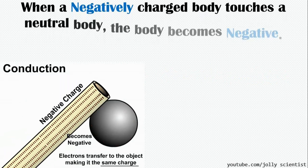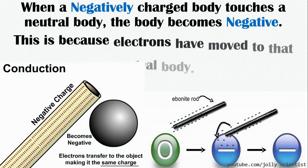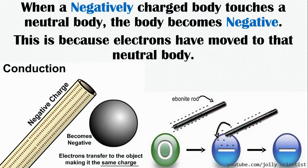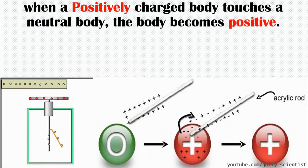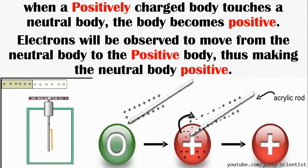Charging by conduction. When a negatively charged body touches a neutral body, the body becomes negatively charged. This is because electrons have moved to that neutral body. When a positively charged body touches a neutral body, the body becomes positive. Why? Because electrons will be moved from the neutral body to the positive body, thus making the neutral body positive.